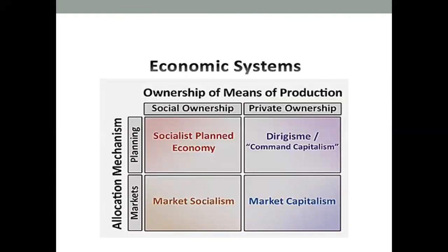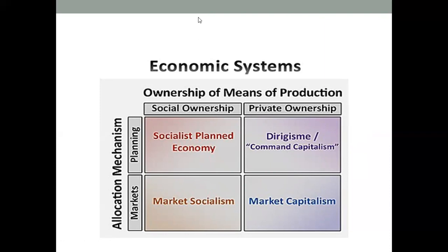Economic systems can be mapped on a matrix based on location. If it is planned with social ownership, this is a socialist planned economy. If we move toward the market system with social ownership, this is market socialism. With social ownership and planning together, this is a planned economy. Private ownership with planning and government controlling the majority is command capitalism. If there is private ownership in a completely free market system, this is market capitalism. By this, we finish the overview of economic systems, the three key questions, and the main systems that have passed through economic history.